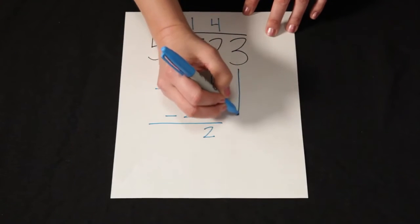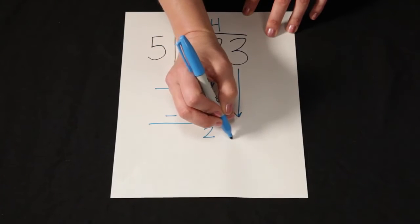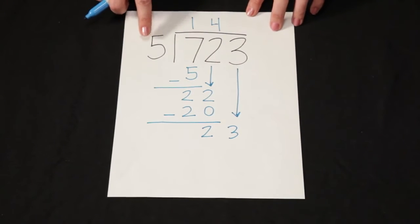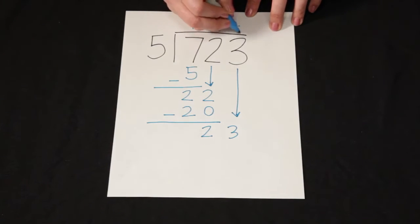And now I'll bring down my 3. I'll make a long arrow and write my 3 down here. And now I'm asking myself, how many groups of 5 can I make with 23? I can make 4 groups of 5.